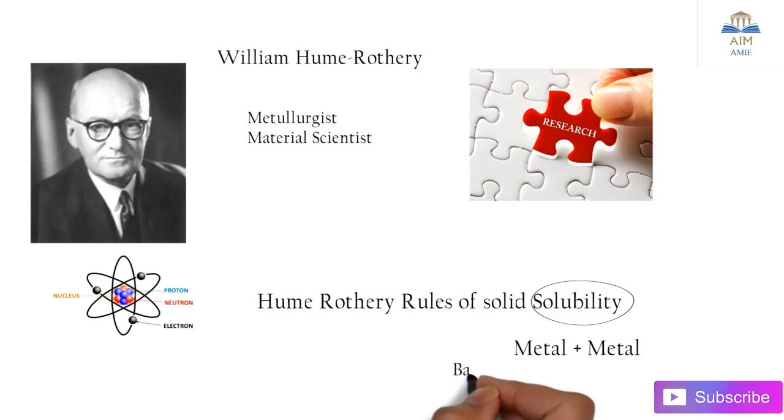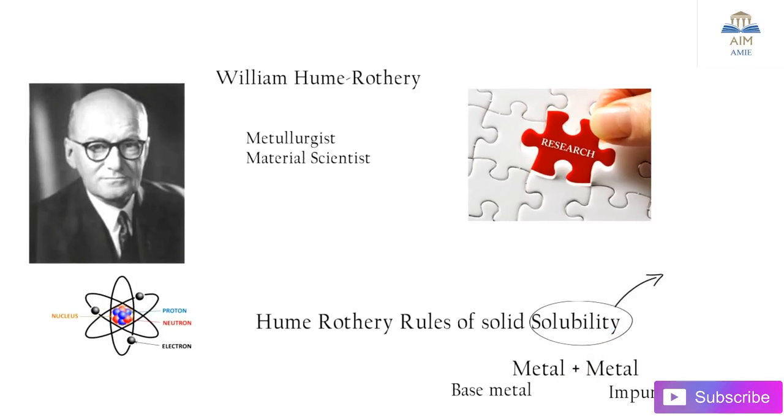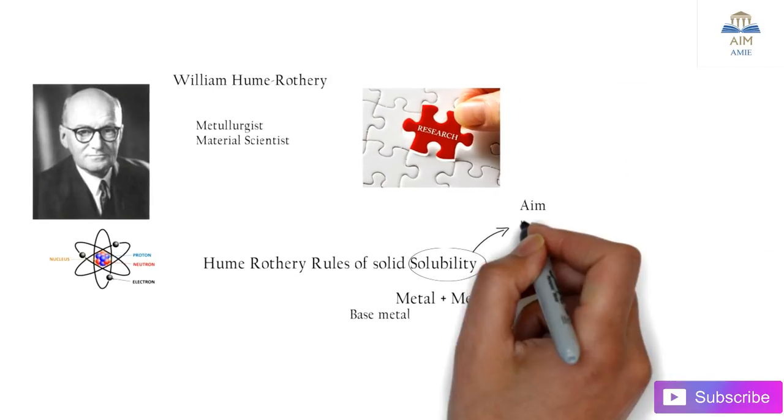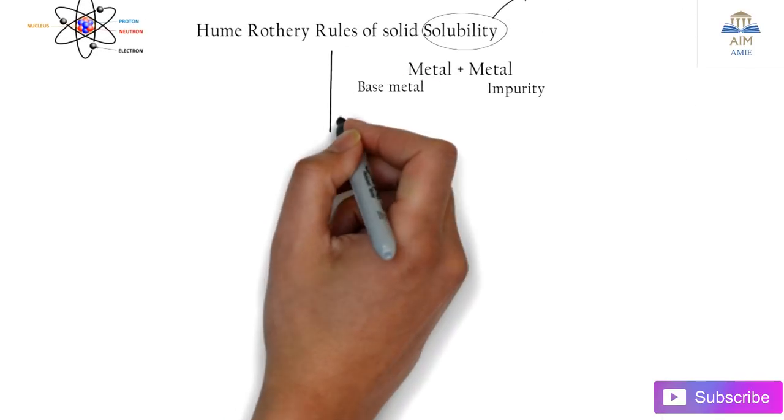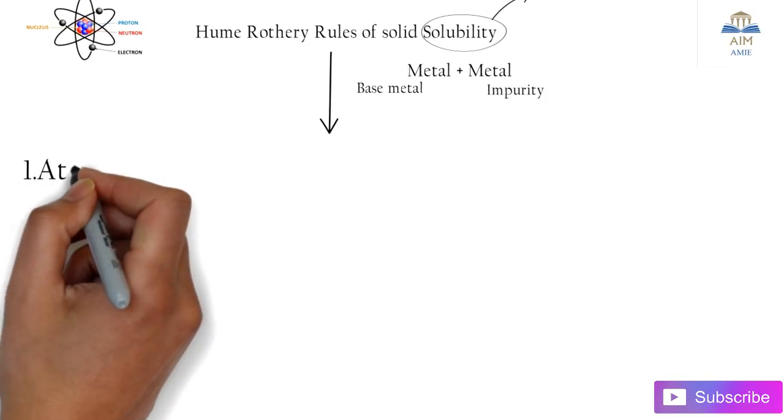Solubility is the metal to metal combination. First one is the base metal and second one is the impurities. What is the aim of this solubility? Why do we need to obtain the solubility? To obtain a particular homogeneous structure or homogeneous solid solution. So there are some rules. Let's check out those rules.